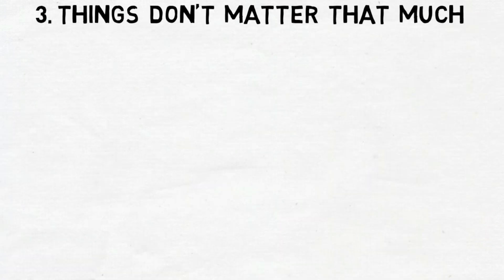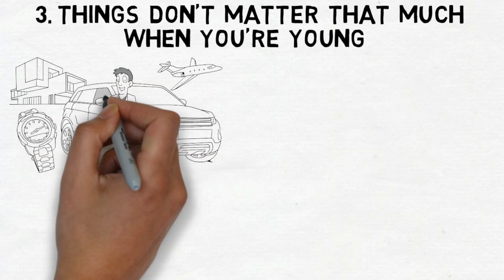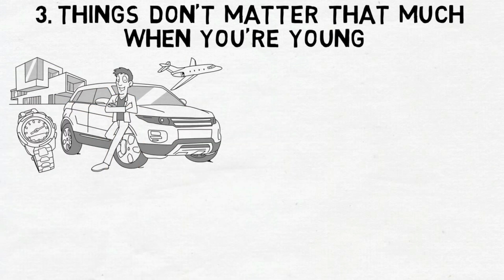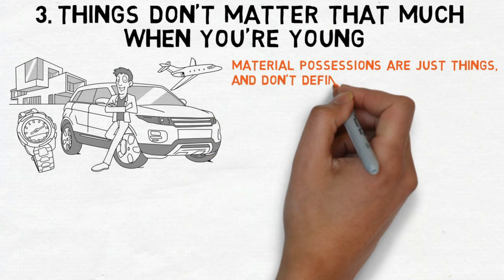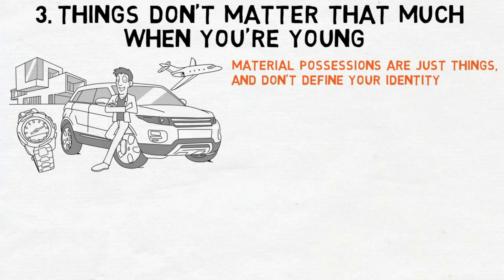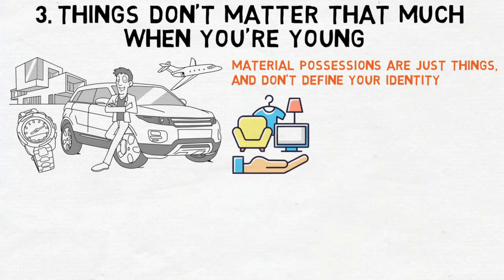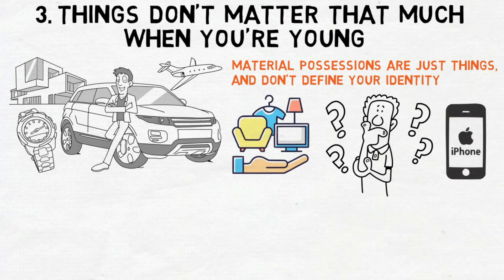Number 3. Things don't matter that much when you're young. You want things because you see other people have them, and think having those things would make your life better. It's important to recognize that material possessions are just things, and don't define your identity. Possessions are essentially items relocated from one place to another.